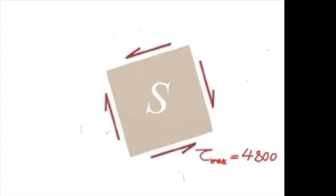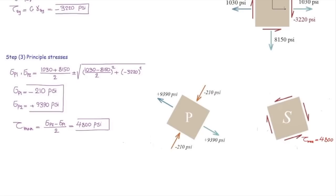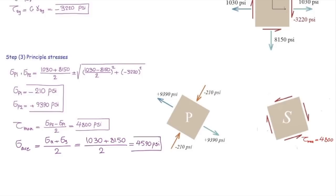Do we expect to see any normal stress on the maximum shear stress element? There might be. The average normal stress is simply σavg = (σx + σy)/2 = 4,590 psi.